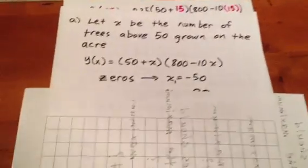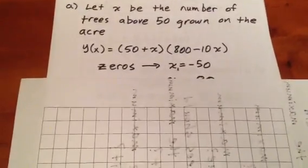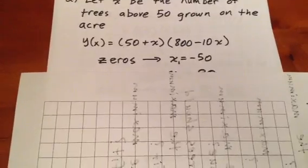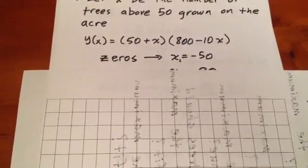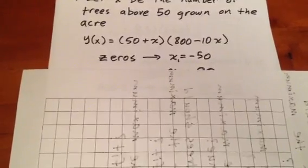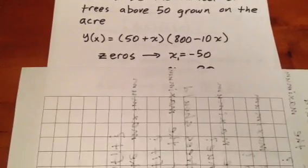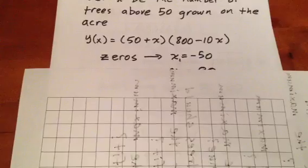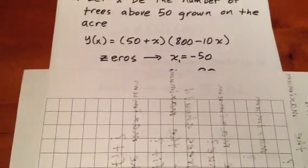This means that we have a quadratic formula, a quadratic equation representing the number of apples grown. It's an upside-down parabola. We know it's opening downwards because the coefficient on X squared is negative when we expand it out.